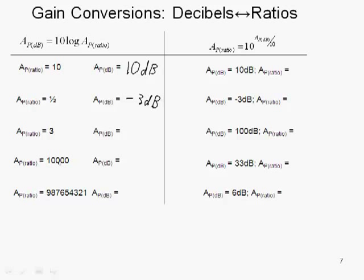A gain of 10,000 as a ratio - we plug that ratio number in here, 10 log of 10,000. Log of 10,000 is equal to 4 times 10, giving us 40 dB. I'll let you fill in the other two numbers.